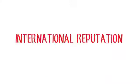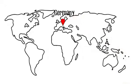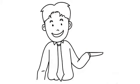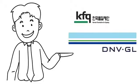International reputation. Royal CERT based in Germany operates in 25 countries ranging from Korea to USA and more are being added year by year. Royal CERT is the international business partner of major brands such as KFQ and DNV GL.